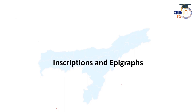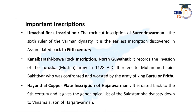Now let us discuss the inscriptions, epigraphs, copper plate inscriptions (Tamralipi), and rock inscriptions (Shilalipi). The first important one is the Umasal Rock Inscription, which belongs to Hurendra Burman, the sixth ruler of the Burman dynasty. It is the earliest inscription discovered in Assam, datable to the 5th century. This is a very important fact to remember: the Umasal Rock Inscription is the first and earliest inscription discovered in Assam.